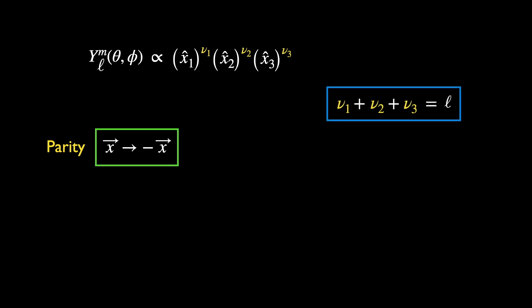The last property of the spherical harmonics, which we will derive, is its behavior under parity transformation. This is defined by the inversion of the position vector. Let's recall that Y is a homogeneous polynomial consisting of terms like this with powers of L. Under the parity transformation in the green box, Y transforms into...